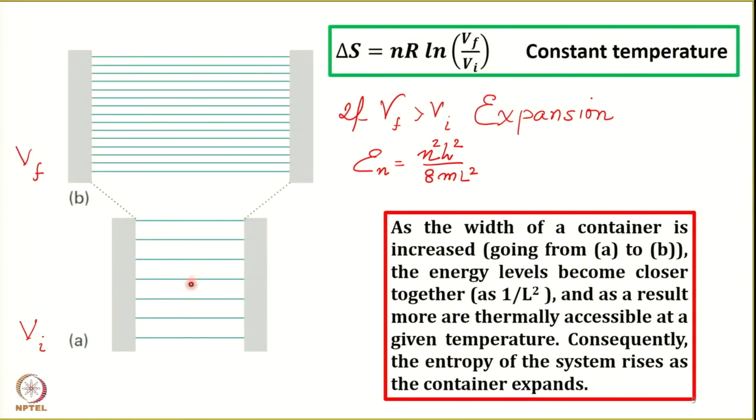If there are more thermally accessible states, the molecules can distribute across a larger number of states, and therefore there will be more entropy. This is the statistical interpretation of why the entropy of a gas increases when it undergoes isothermal expansion from an initial to a final volume — we consider what happens to the population of different states when the gas is allowed to expand isothermally.